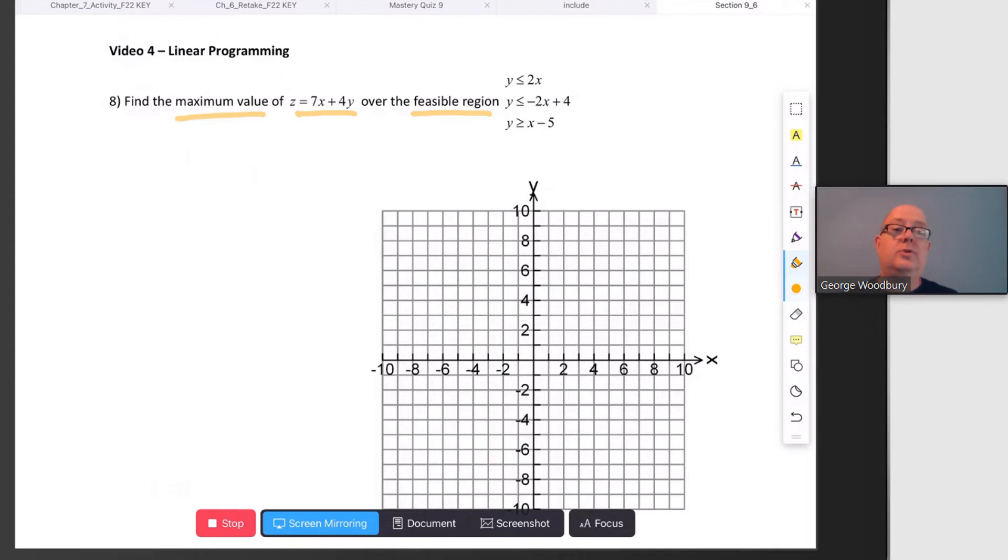What we're going to do first is graph that system of inequalities, and then we're going to find the vertices of that region where two of the lines cross. The maximum or minimum has to be found at that location. Let's get started. We're going to graph the first line in separate colors. I'm going to use blue for y ≤ 2x, and notice all of these are solid. This first line has a slope of 2,